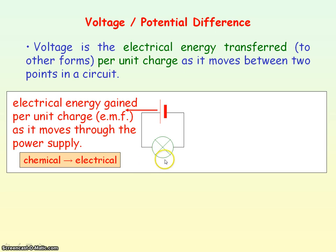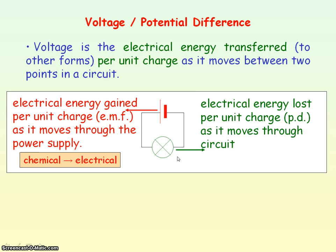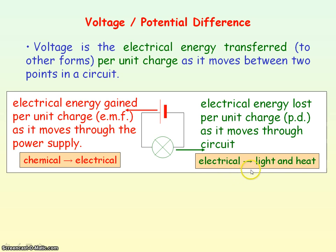We now consider the voltage or potential difference across the lamp. It represents the electrical energy lost per unit charge as the charge moves through the lamp. The energy transformation occurring in the lamp is from electrical to light and heat energy. So the cell gives each unit charge electrical energy so that it can move around the circuit, and as the charge goes through a component it loses that electrical energy.